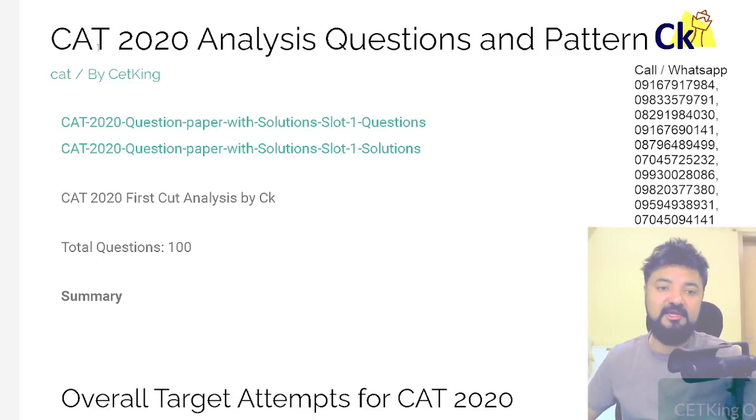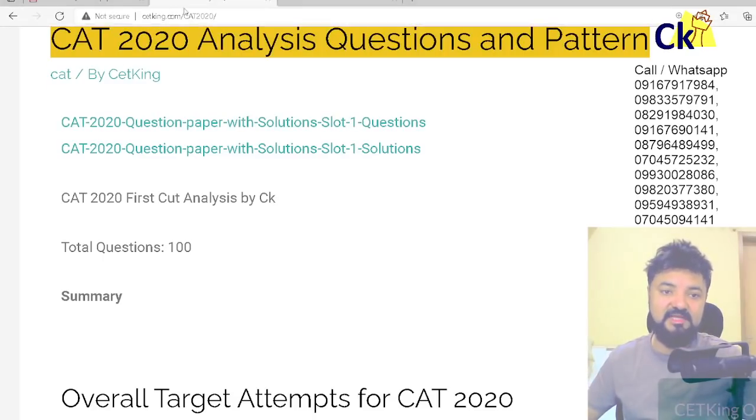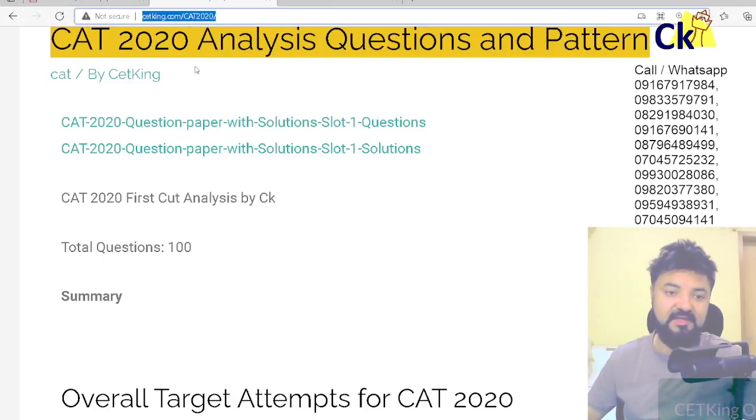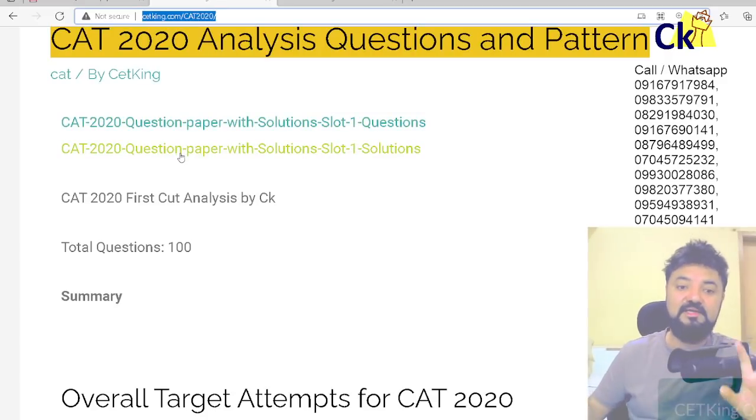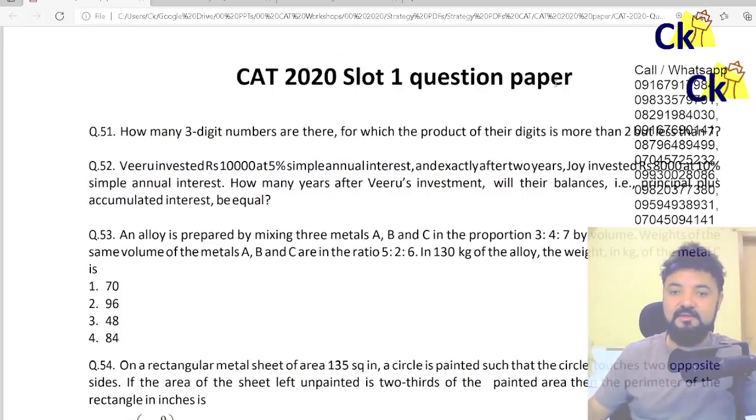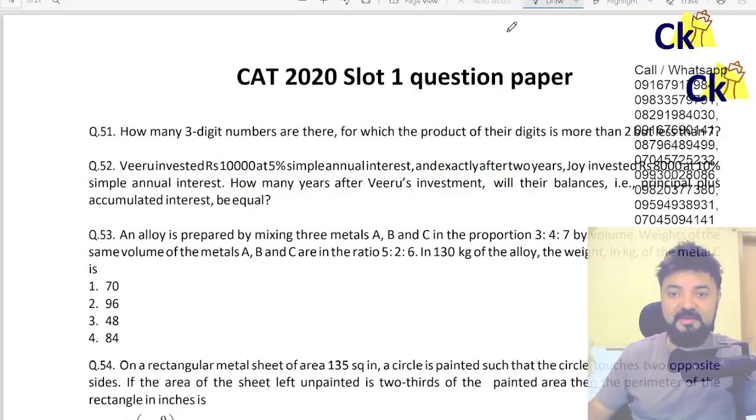So download the paper of CAT 2020 from cetking.com slash CAT 2020 simple link paper and solution so that you can go through the paper. I want you to understand the paper, analyze the paper, what kind of questions are coming. That is what exactly you want to do today. And then we look at the cutoff. So this is the Quant section I am picking up today. If you like this video please do comment. I will do the similar thing for the logic and the DI section as well, logic and the verbal section as well.